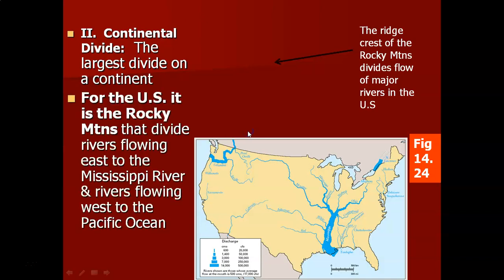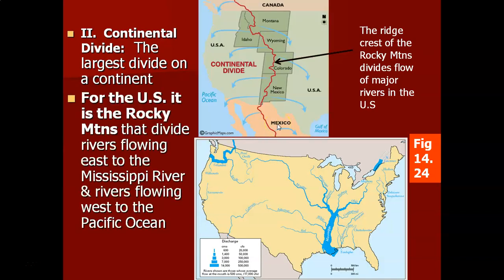The second topic is the Continental Divide — nothing more than the largest drainage divide on a continent. It's going to be a mountain range that divides the biggest rivers on a continent. For the United States, our Continental Divide is the ridge crest of the Rocky Mountains, dividing rivers flowing westward into the Pacific versus rivers flowing eastward into the Mississippi River.